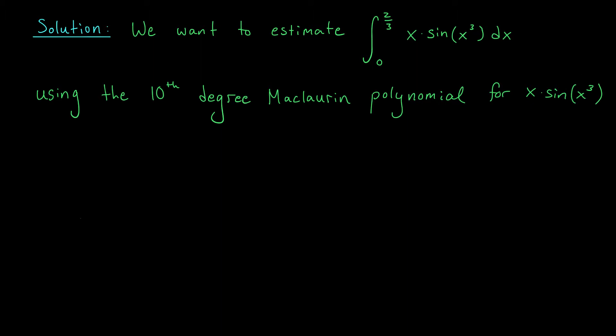If we find the third degree Maclaurin polynomial for sine of u, then by replacing u with x³, we get a Maclaurin polynomial for sin(x³) of degree 9. Finally, we multiply that polynomial by x to get a polynomial for the desired function. Multiplying by x increases the degree by 1, giving us a polynomial of degree 10. So we'll start by finding the degree 3 Maclaurin polynomial for sine of u.